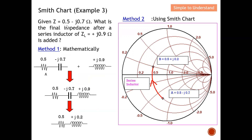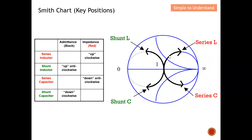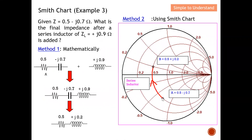Now I introduce a series inductor. For a series inductor, the movement on the Smith chart is upward in a clockwise direction. Starting from the point 0.5 - j0.7, I move up clockwise. I need to move a total of 0.9 — since I'm already at -j0.7, I move another 0.2 beyond the resistivity line. The final outcome is 0.5 + j0.2, which matches the mathematical calculation.